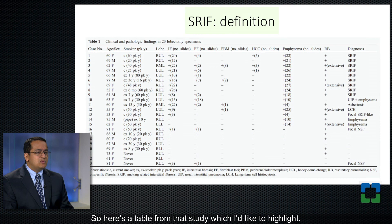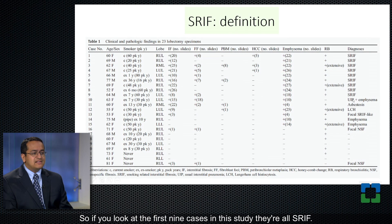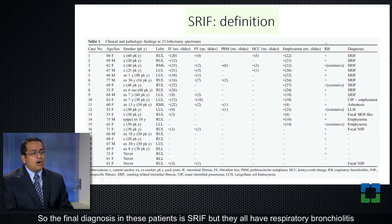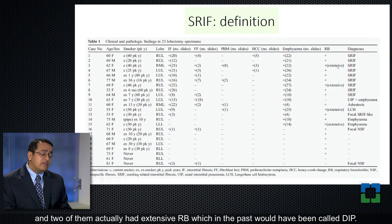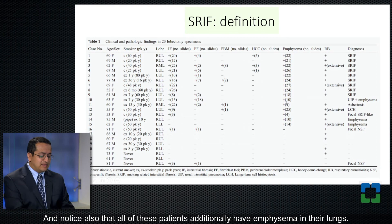Here's a table from that study worth highlighting. Looking at the first nine cases, they're all SRIF as the final diagnosis, but they all also have respiratory bronchiolitis — and two of them actually had extensive RB which in the past would have been called DIP. Notice also that all of these patients additionally have emphysema in their lungs.